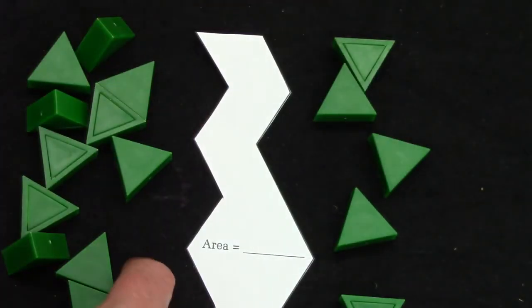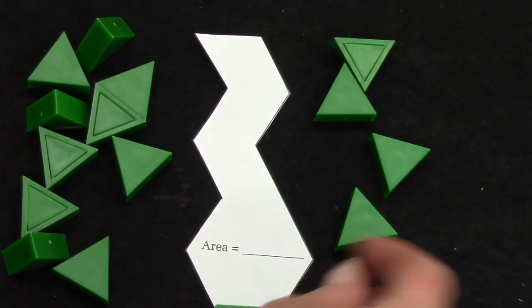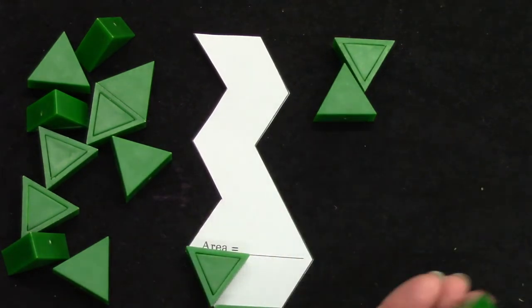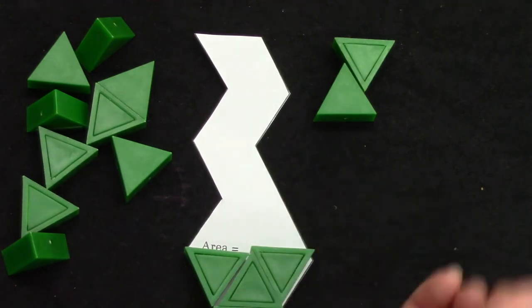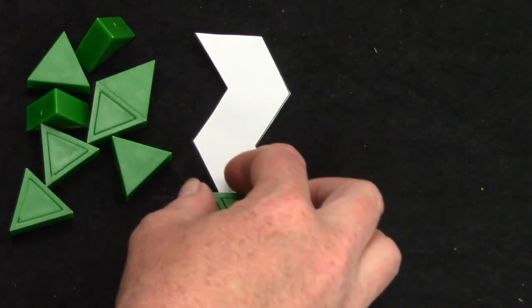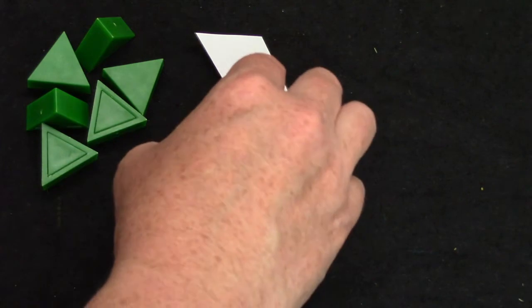All right, class, I have one more shape here to cover and we're going to cover the area. I want you to guess how many I'm going to need. I've got three there. Four, five, six, seven, eight, nine.